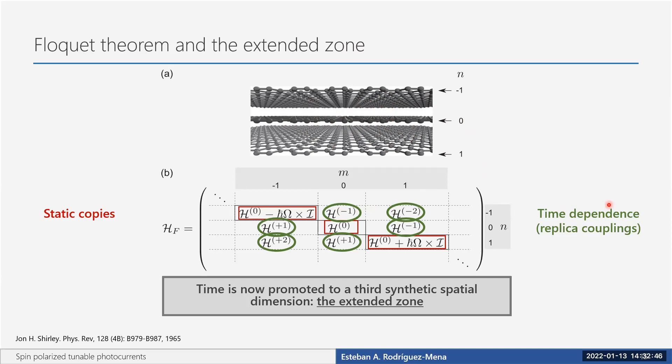Time is promoted to a third synthetic spatial dimension. The natural question is: how many replicas do you need for physically meaningful results? The answer is: as many as needed until convergence is achieved. This depends explicitly on the problem and on the frequency, since the frequency regulates how strongly the replicas are coupled to each other.